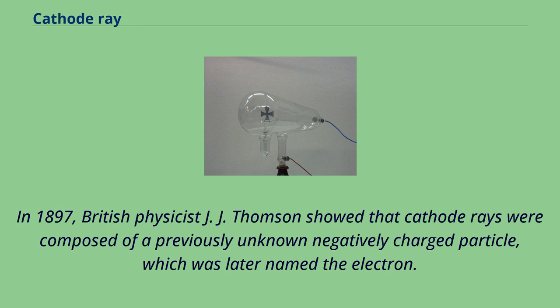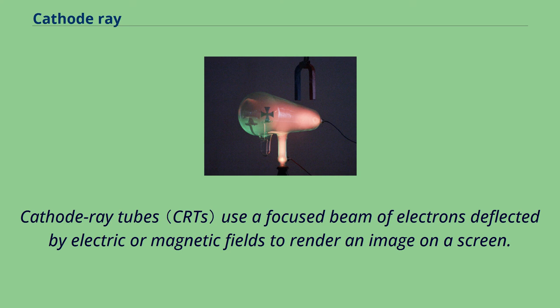In 1897, British physicist J.J. Thompson showed that cathode rays were composed of a previously unknown negatively charged particle, which was later named the electron. Cathode ray tubes use a focused beam of electrons deflected by electric or magnetic fields to render an image on a screen.